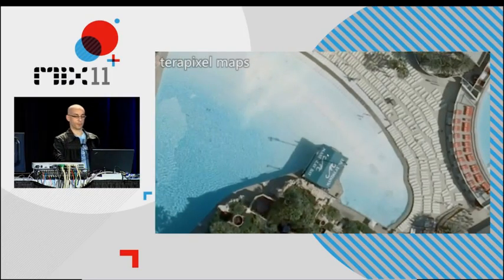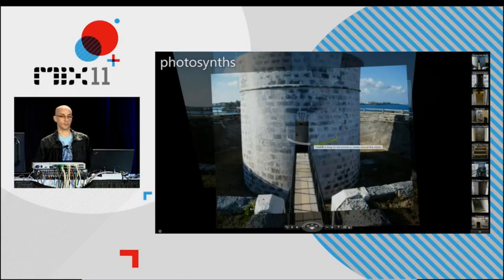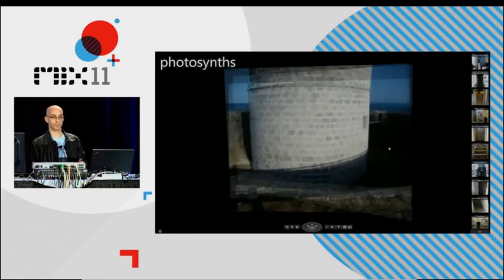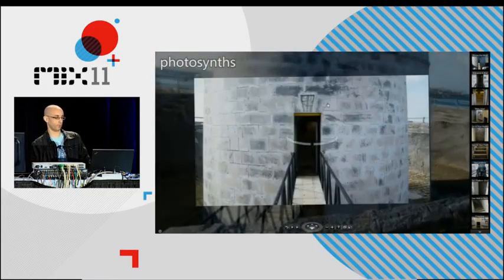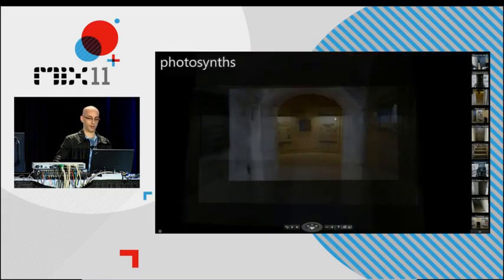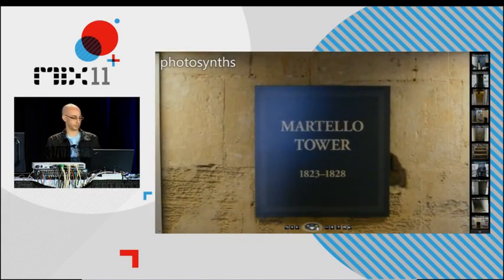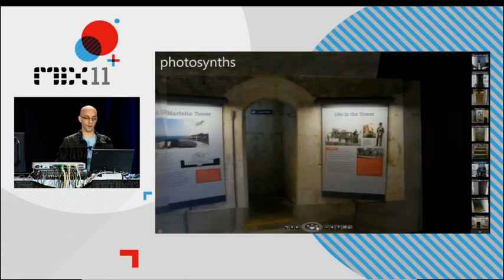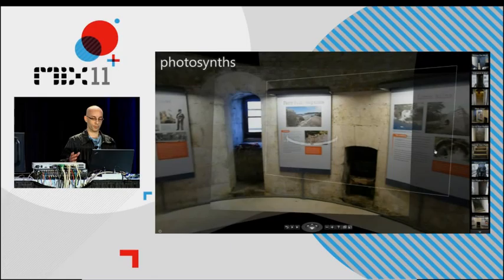Here's another example of immersive content. This is Photosynth, and it combines many, many images, but in a different way. It analyzes the images to discover their 3D relationships and allows you to rotate around objects and move left and right and forward and back to investigate the 3D space. Here we're going to move inside this fortified tower and take a look at what's inside. Now we'll spin around and see a panorama view inside the tower. It gives you a good overall sense of the 3D space, both inside and out.